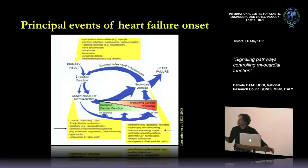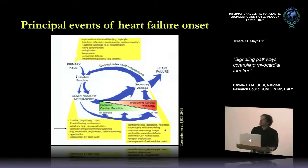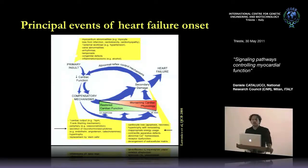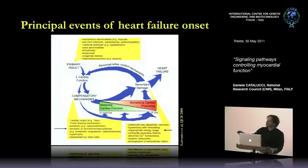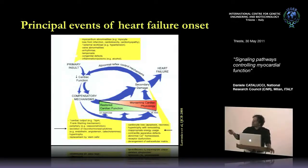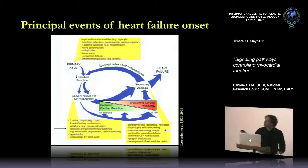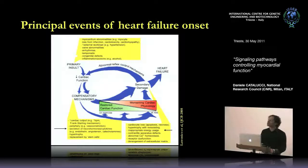If we look at this sketch, we can see that normally cardiac dysfunction starts with a preliminary insult and a reduction in cardiac function. This can involve myocardial abnormalities due to infarction — leading to loss of cardiac myocytes — or cardiomyopathy, but also external workload like hypertension or congenital defects.